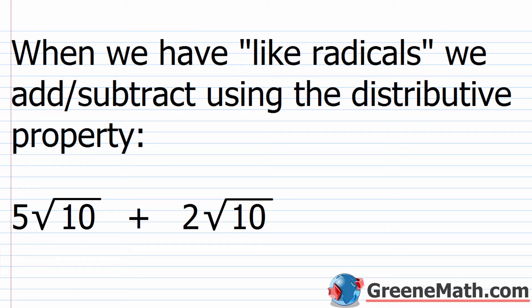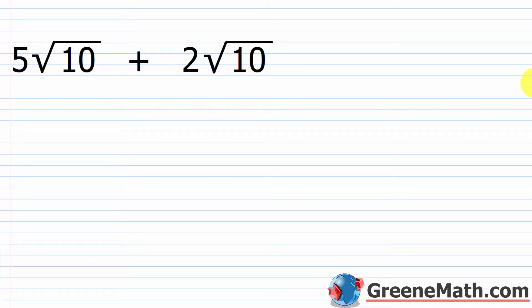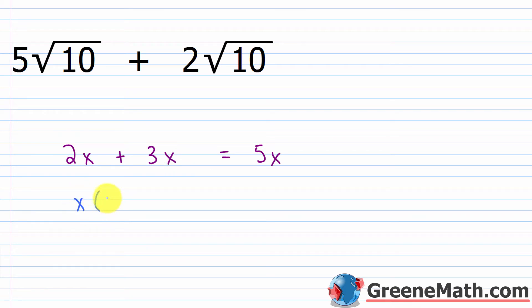I always explain this with the concept of like terms because it's essentially the same level of understanding. Once you figured out what like terms were, it was very easy to combine them using the distributive property. When we have like radicals, it's going to be the same thing — very easy to combine them using the distributive property. To show you with something you already know: if I had 2x plus 3x, I know that's 5x. But we could factor an x out and write this as x times the quantity 2 plus 3, since x is common to each.